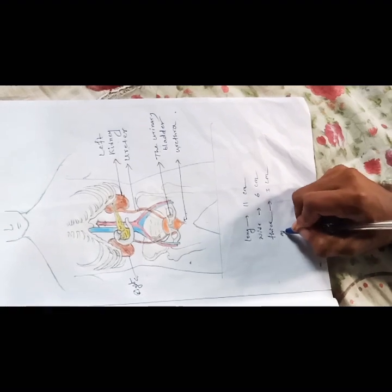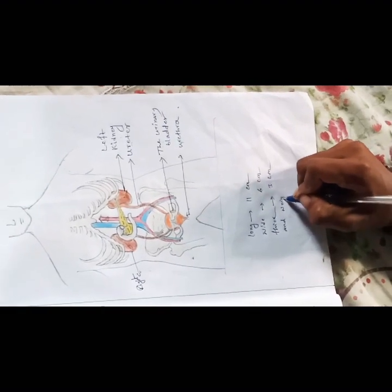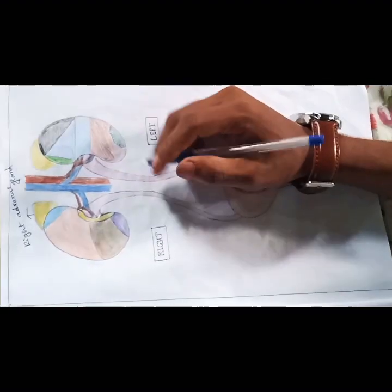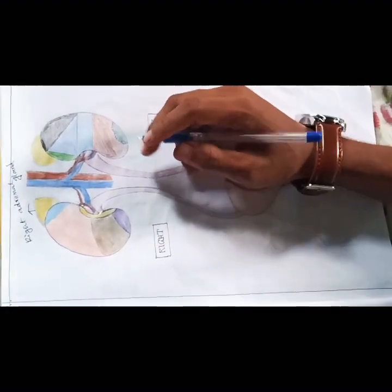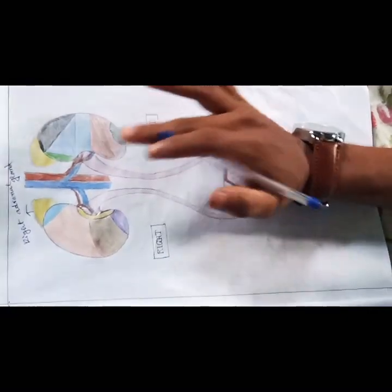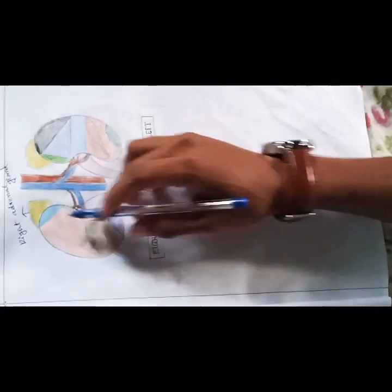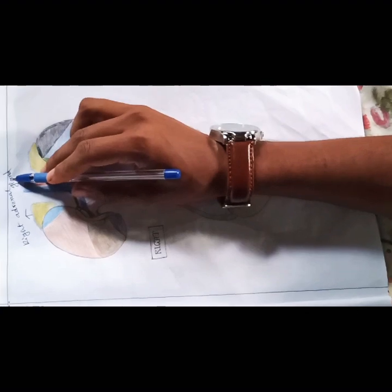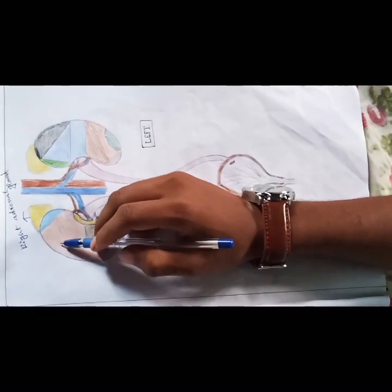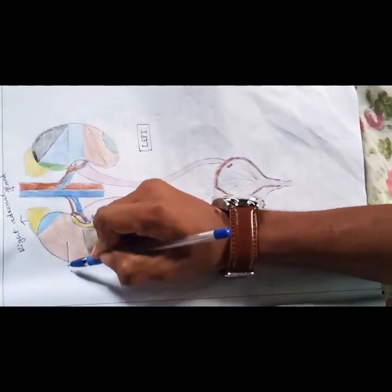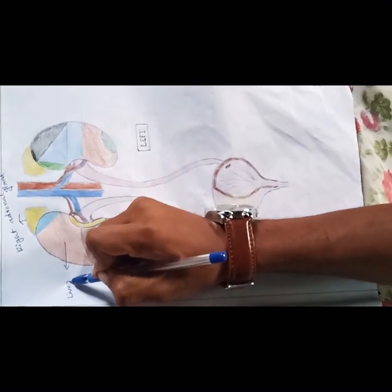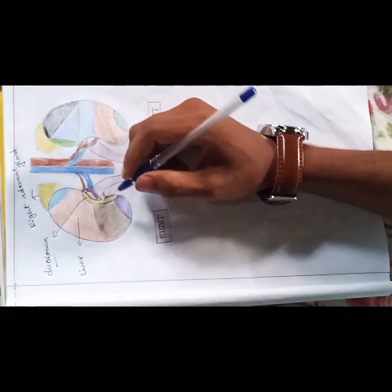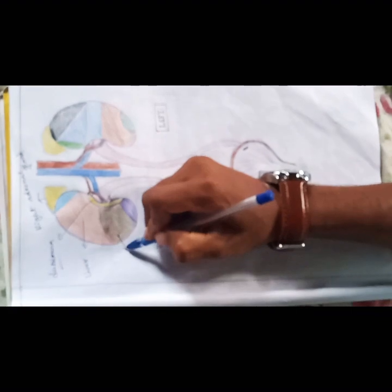Now I am going to discuss about the organs associated with the kidneys. For the right kidney: superiorly it has the right adrenal gland, and anteriorly the right lobe of the liver, the duodenum, the hepatic flexure of the colon — the right colic flexure — and the small intestine.